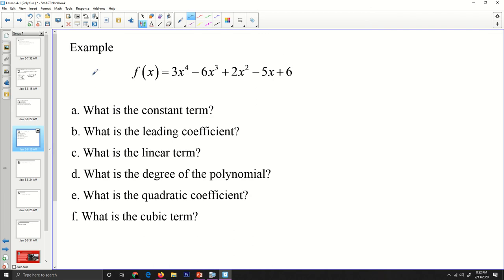Let's talk about an example. If we look at this thing, f(x) = 3x^4 - 6x^3 + 2x^2 - 5x + 6. What is the constant term? The constant term is the term that has no variable. It is 6. What is the leading coefficient? So I go and I find the highest power. It's 4.